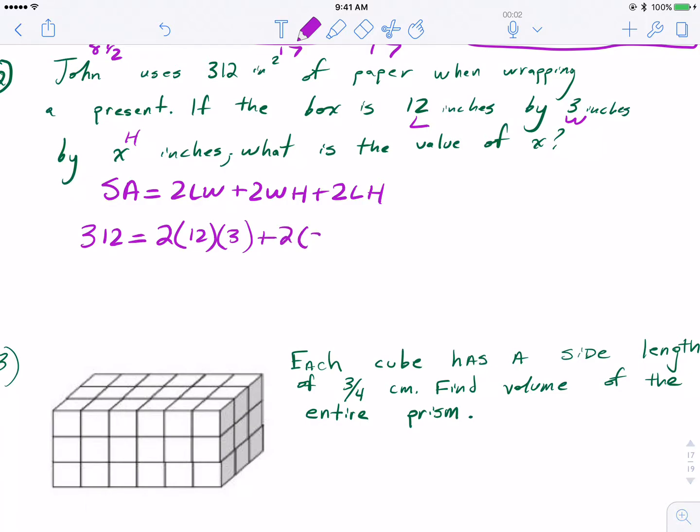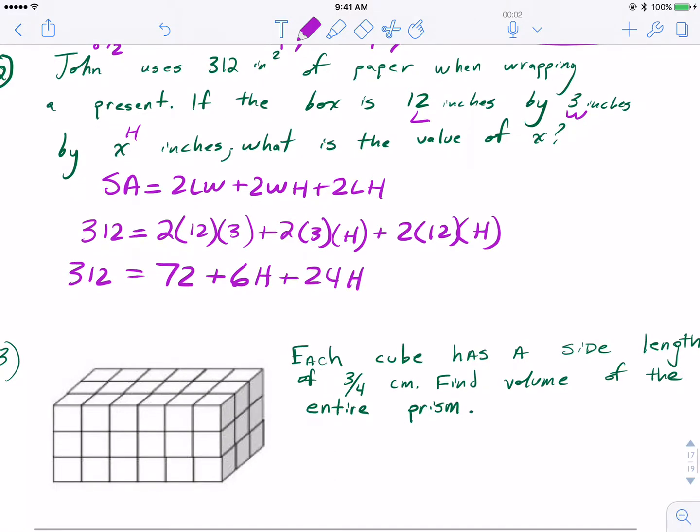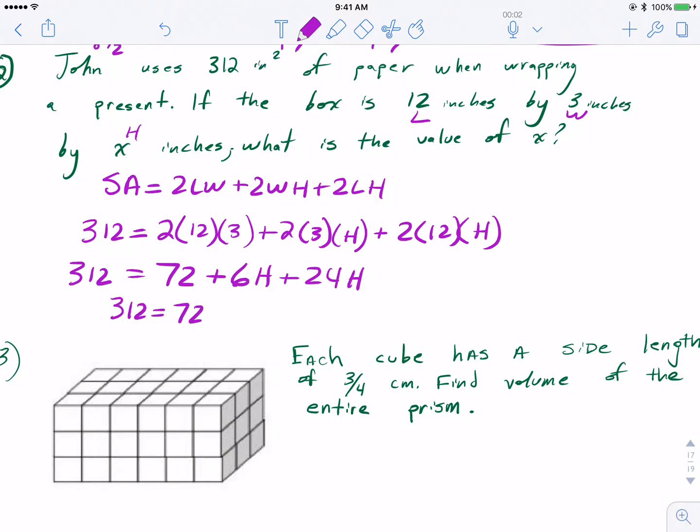So let's designate this as L, this is W, and we'll call the missing side our height. It's a good idea to write the W and the L so you don't confuse yourself with what's what. The length was 12, and H is once again the height. So I'm going to get a number to start, but then everything else is going to contain a variable. This is going to be 72, this is going to be 6H, and then 24H. So you see this is going to develop into an equation. I'm going to combine like terms to give me 30H, and now I have a two-step equation in my hands.